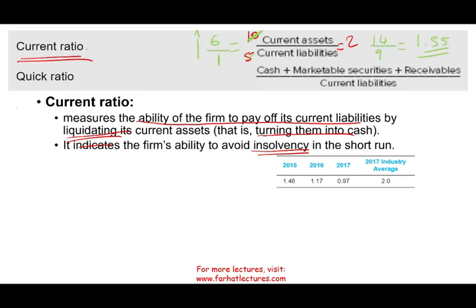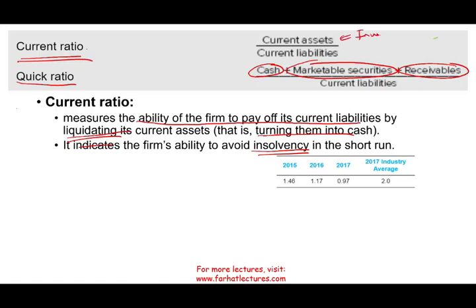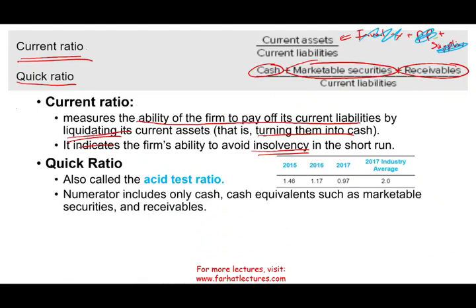From the current ratio, we're going to look at the quick ratio — very similar, except we make some changes in the numerator. Current assets include cash, marketable securities, receivables, inventory, prepaid, and supplies. With the quick ratio — also called the acid test ratio — we assume your inventory became unsellable, your prepaid cannot be sold, and your supplies are needed to operate. So in the numerator, we keep only cash and cash equivalents such as marketable securities, and receivables. We assume the other current assets — inventory, prepaid, and supplies — are either not convertible into cash or not really worth anything.